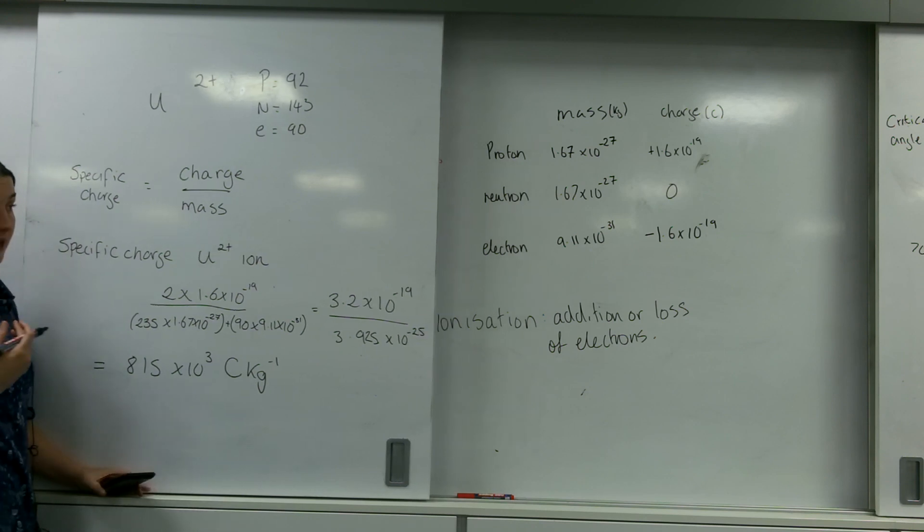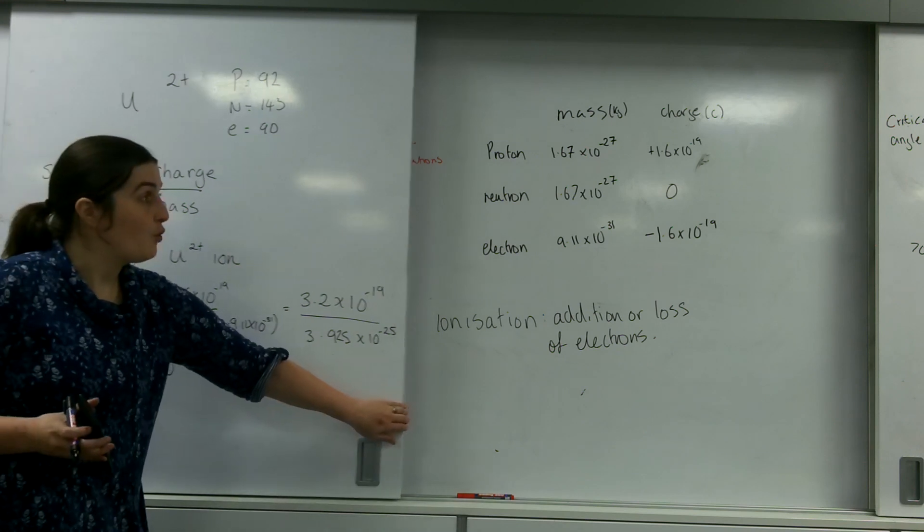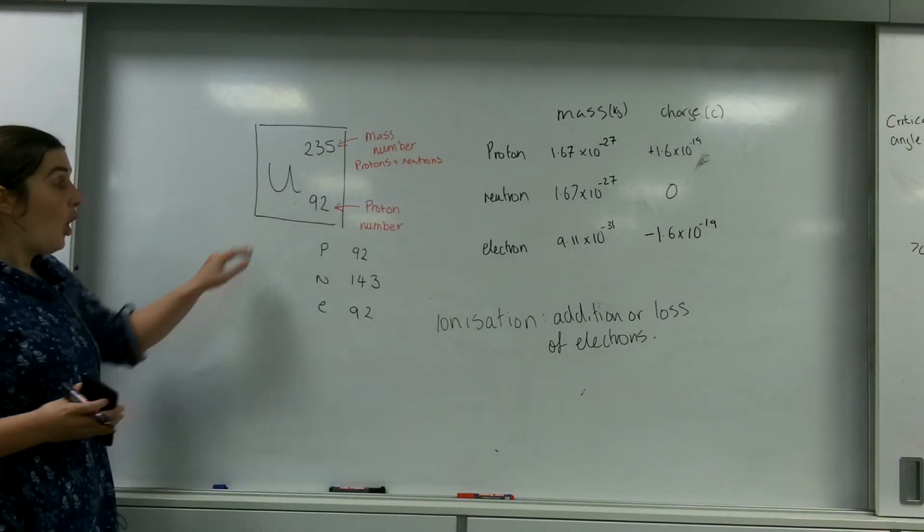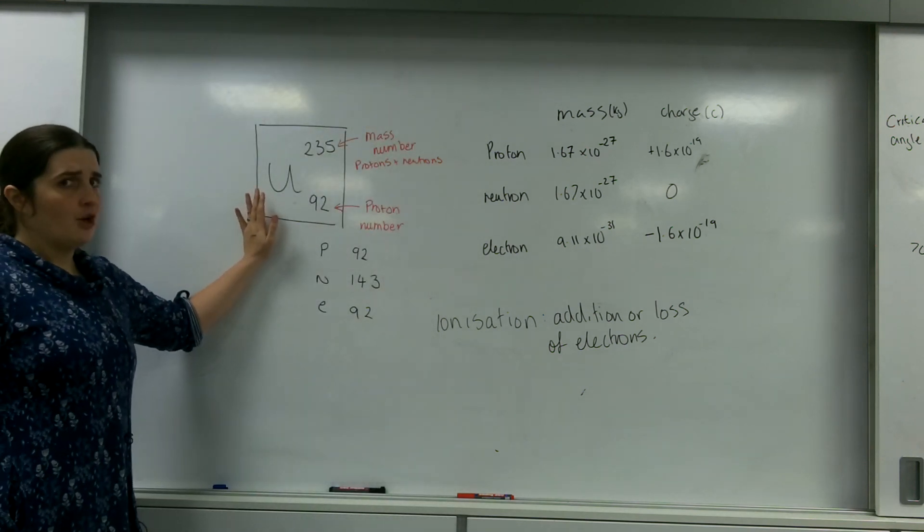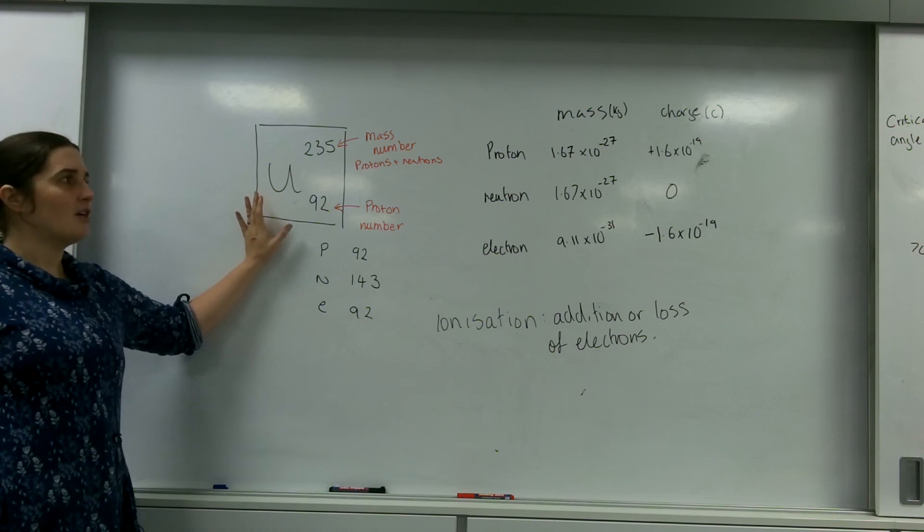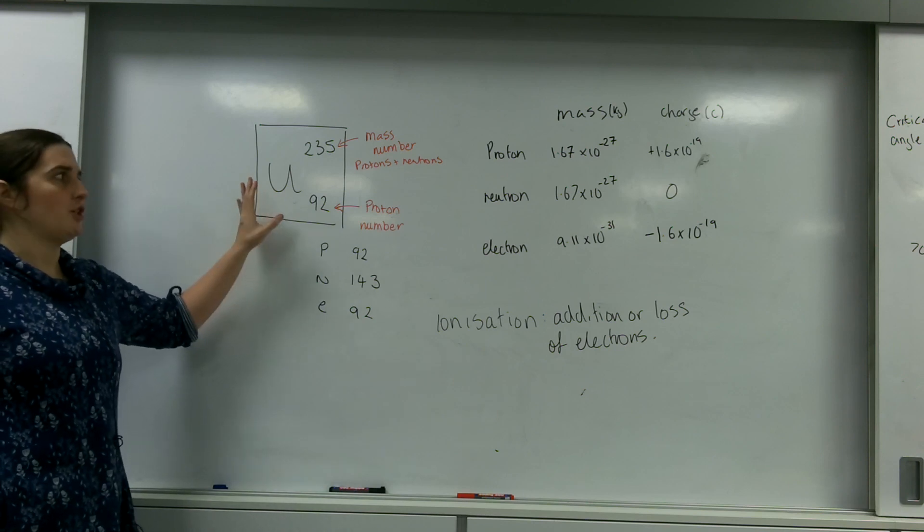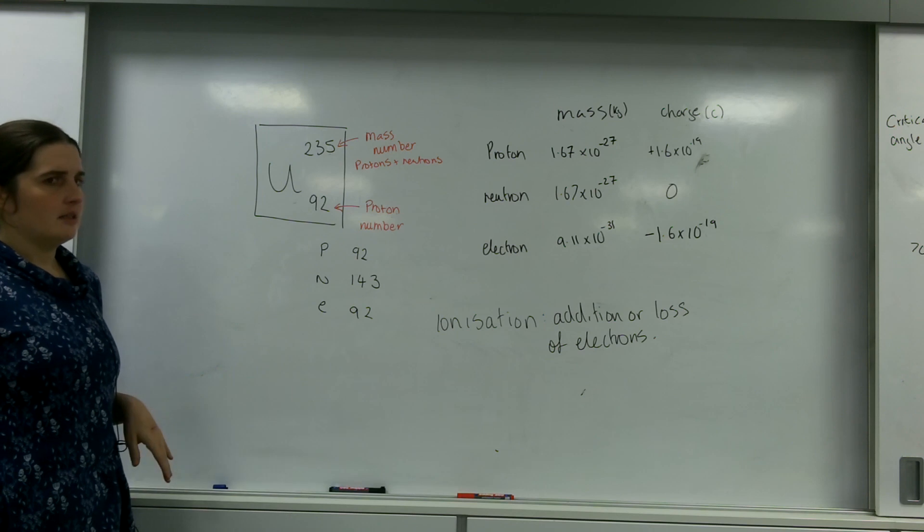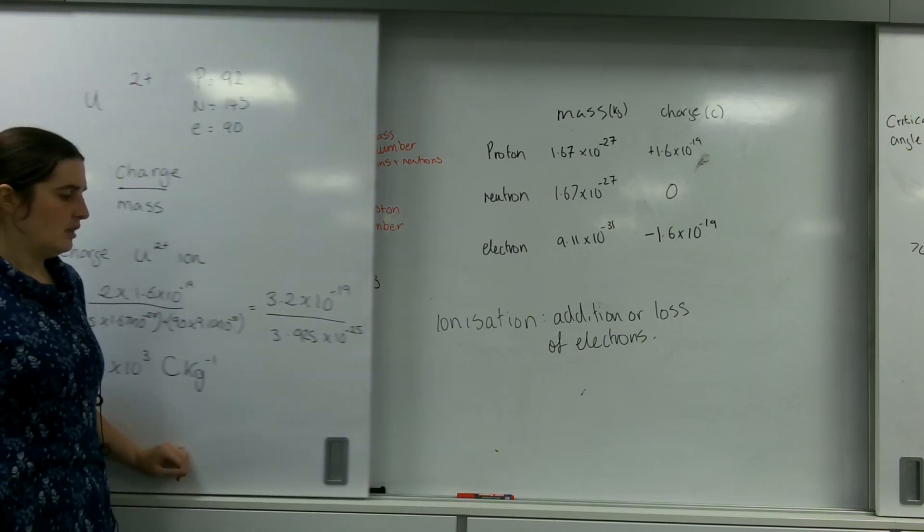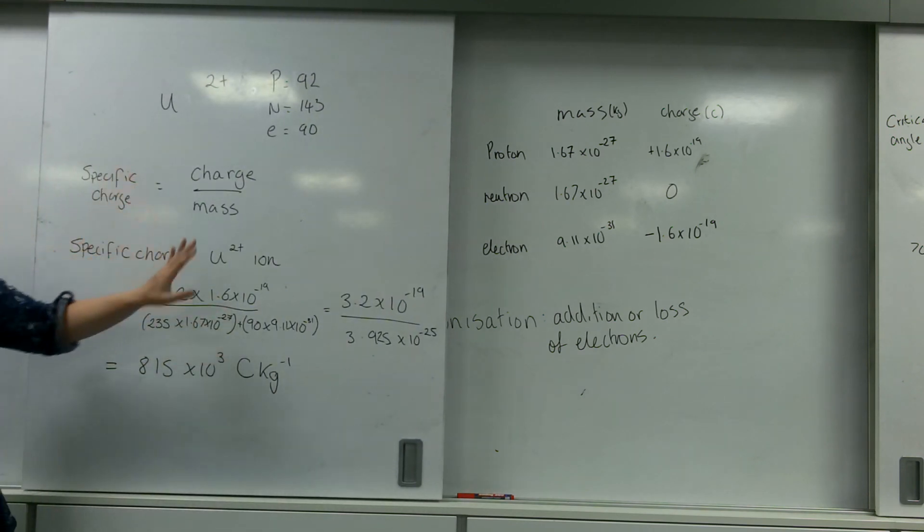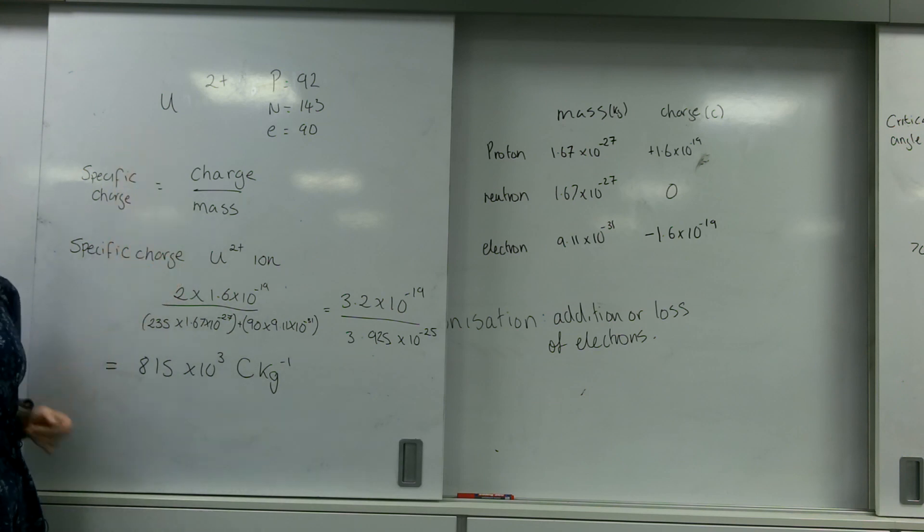To make you aware, when it was in this form here, the whole atom had no charge at all. So, it has no charge, no specific charge. So, this whole atom has no specific charge. This ion does have a specific charge, because it does have a charge.